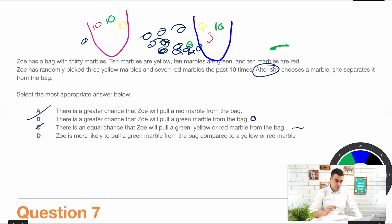And then Zoe is more likely to pull a green marble from the bag compared to a yellow or red marble. So this is also correct. So now I'm stuck. Which is correct? B or D?